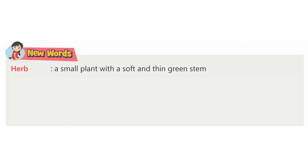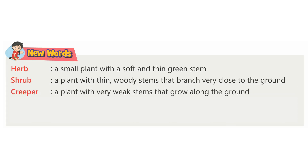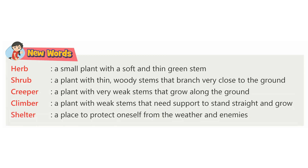New Words: Herb — a small plant with a soft and thin green stem. Shrub — a plant with thin, woody stems that branch very close to the ground. Creeper — a plant with very weak stems that grow along the ground. Climber — a plant with weak stems that need support to stand straight and grow. Shelter — a place to protect oneself from the weather and enemies.